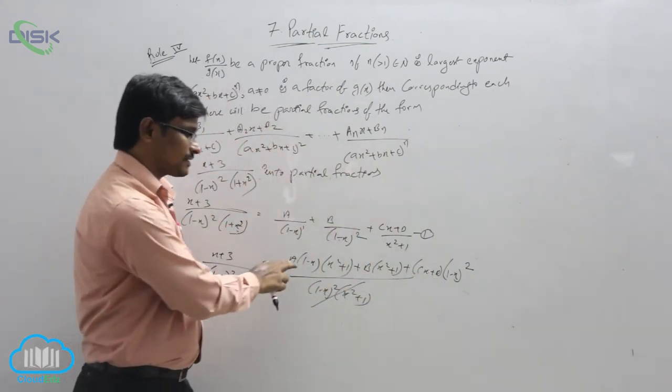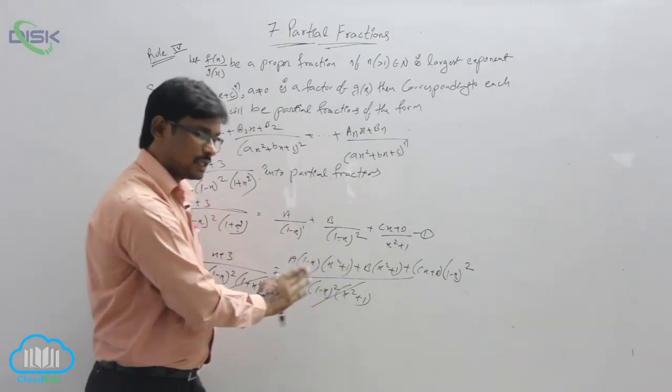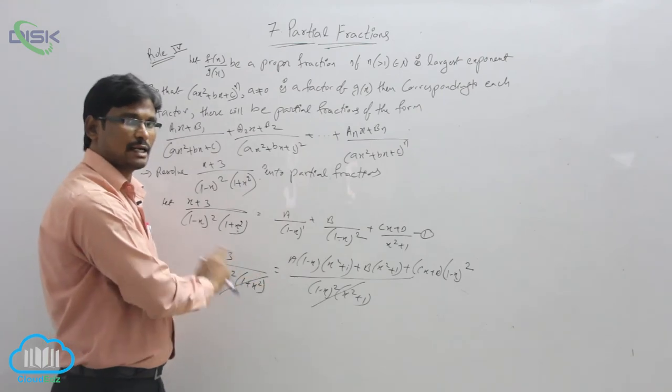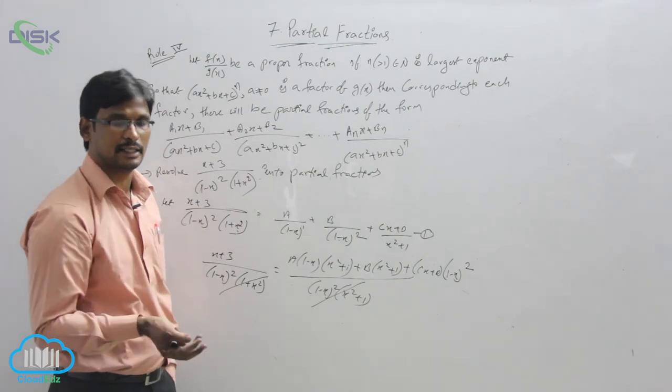In that, take x² coefficients common, x coefficients, and constants. Compare both sides LHS and RHS: x² coefficients, x coefficients, and constants. We will get 3 equations.